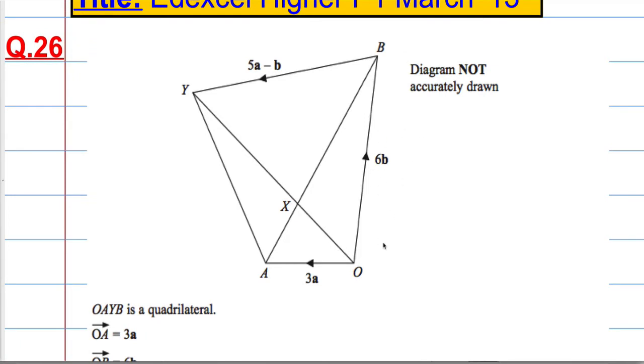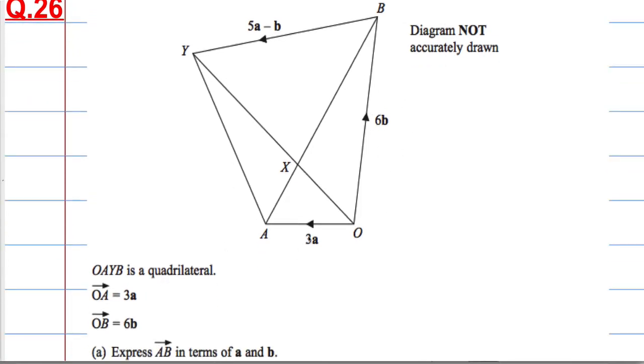So we've got our quadrilateral here, not drawn accurately. OA is the vector 3a, and OB is the vector 6b.